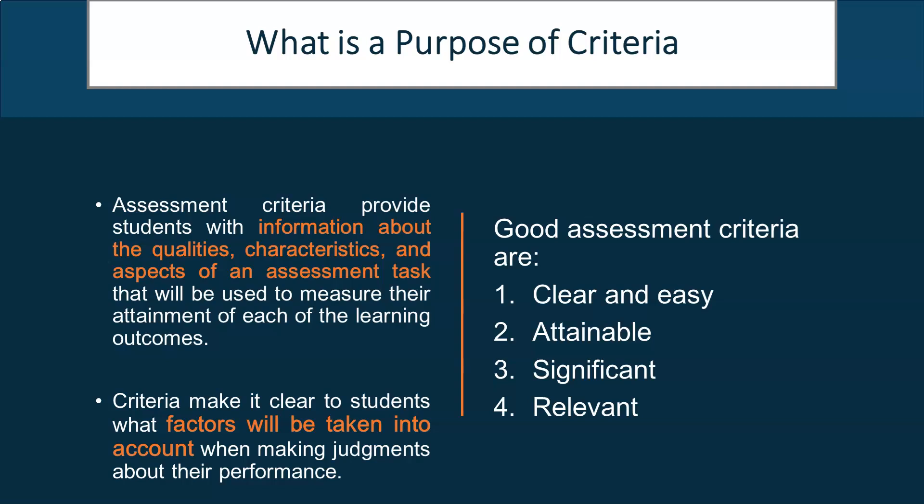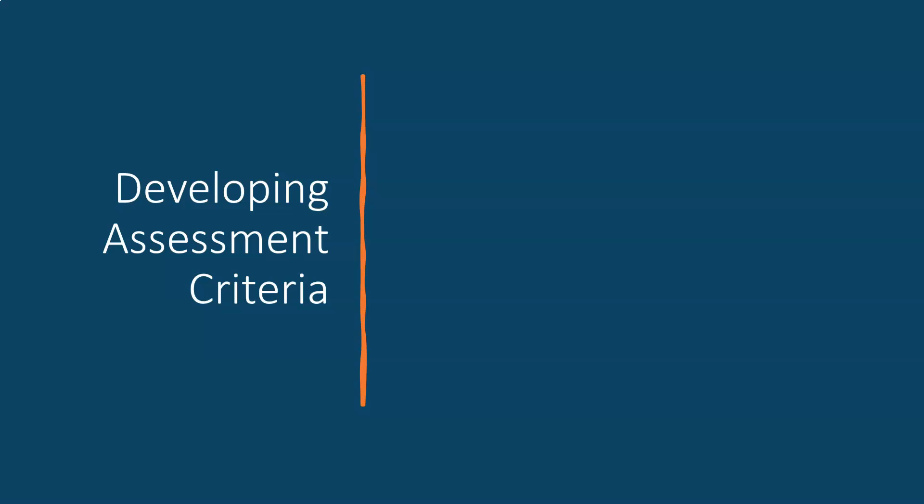Developing assessment criteria also involves grading criteria. Grading criteria are the standards or expectations that teachers use to evaluate students' performance in an assessment. Grading criteria can be expressed as rubrics, checklists, rating scales, descriptors, or guidelines that describe the quality of work required for each grade or mark. Grading criteria can be applied to different types of assessments such as essays, presentations, projects, tests, or portfolios.